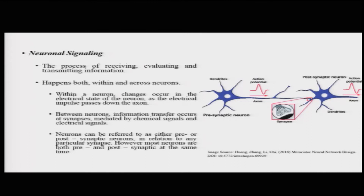The process of receiving, evaluating, and transmitting information is referred to as neuronal signaling, and it happens both within neurons and across neurons. A signal could be generated within the cell body and then passed on to other neurons via transmission throughout the length of the axon, or it could be received from another neuron and passed on along the axon to other neurons. So it can happen across neurons as well as within neurons.